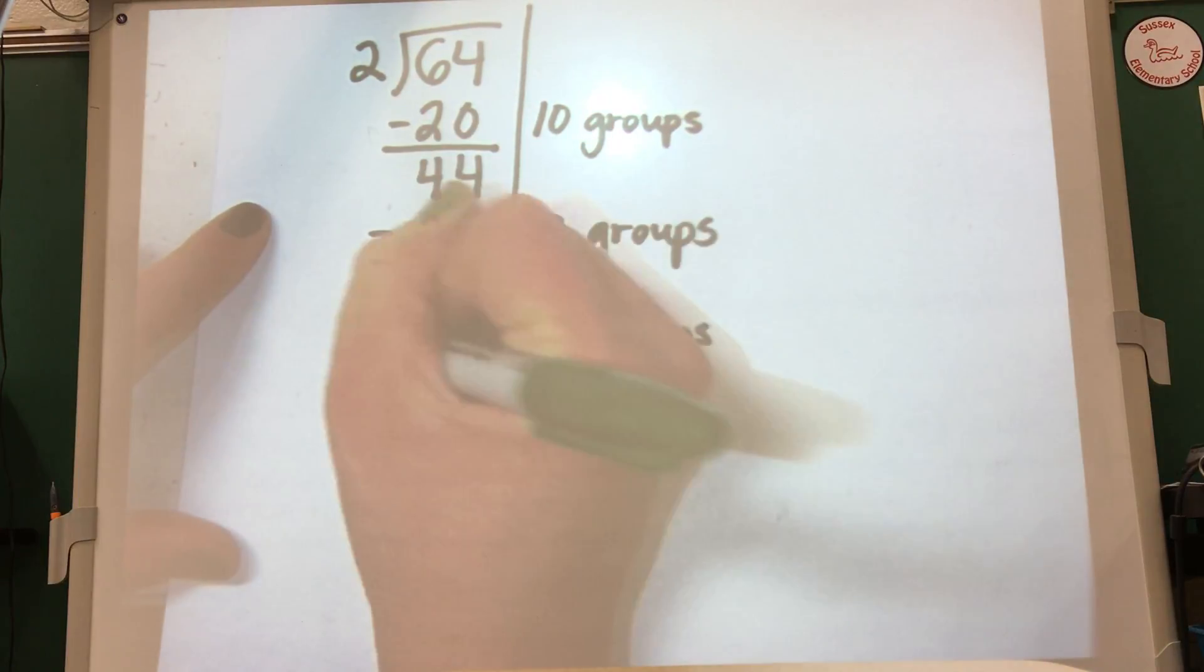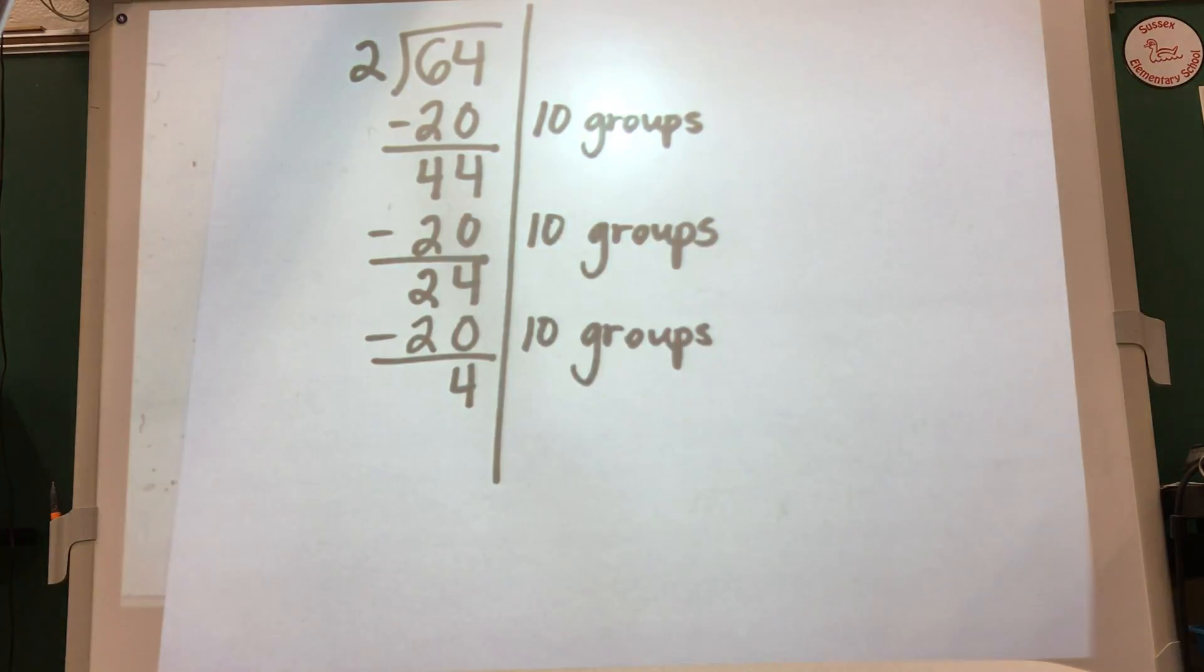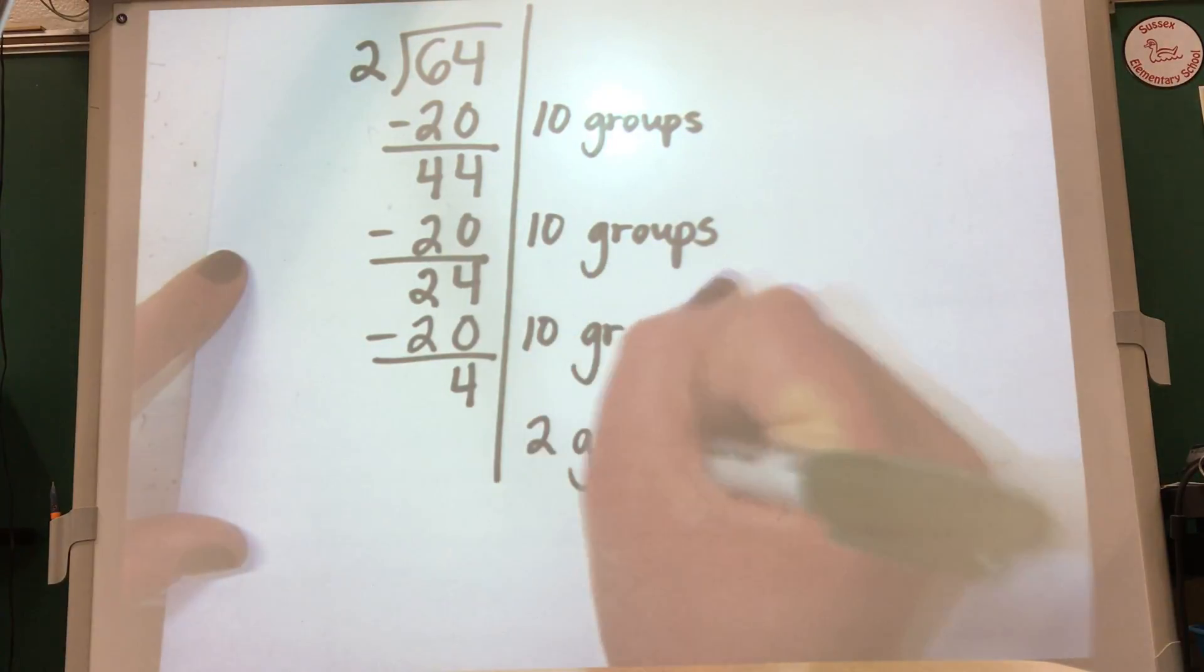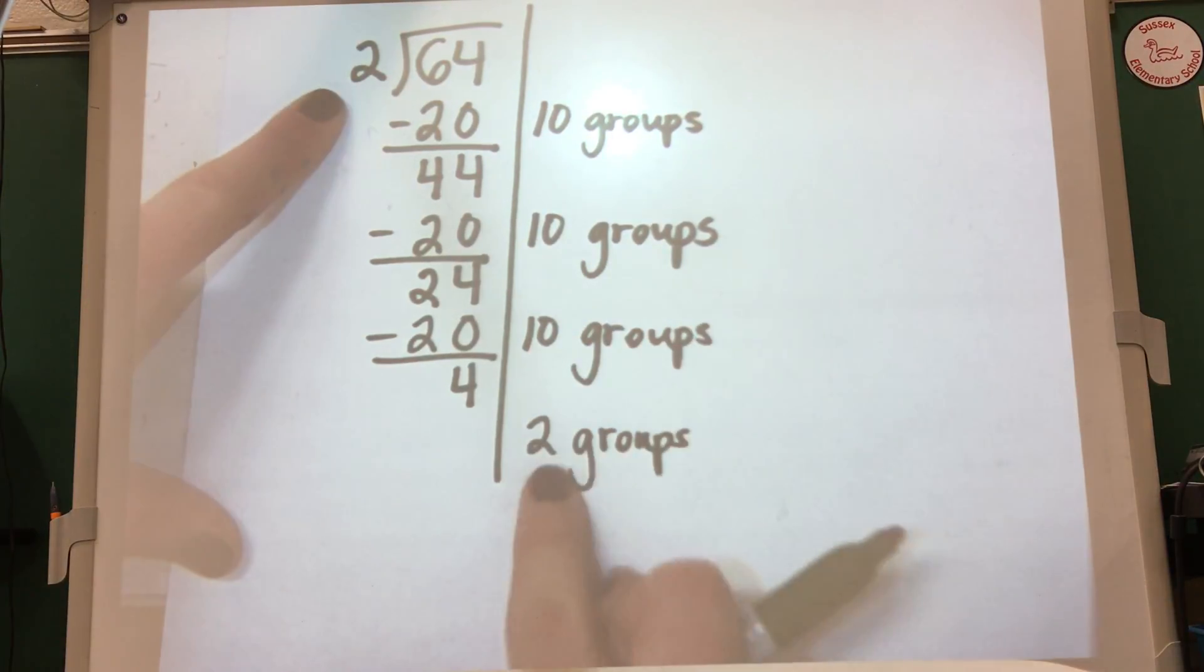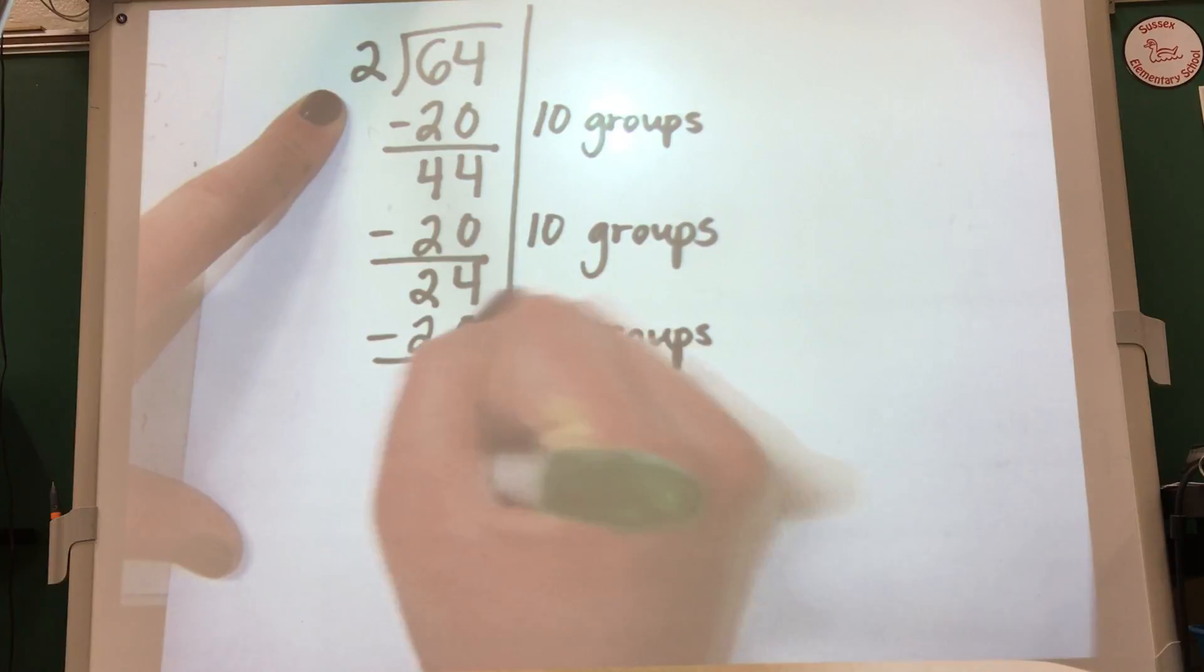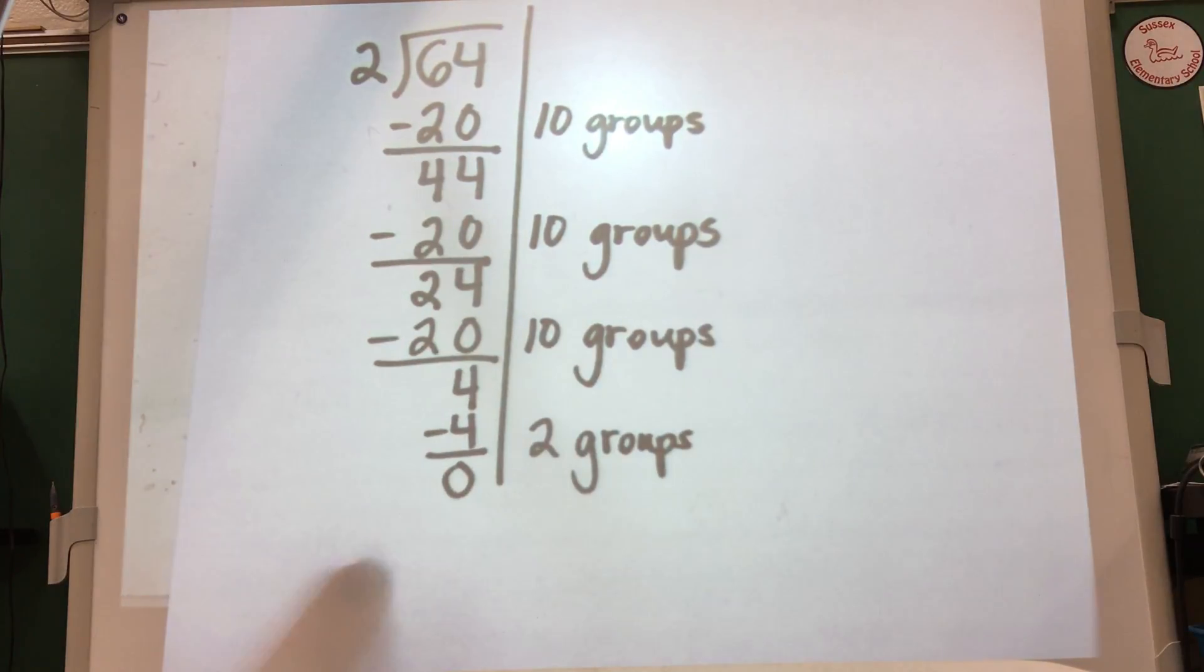If I subtract that I only have 4 left. That's not enough to pull out another 10 groups of 2, but I do know that 2 groups of 2 will make 4 because 2 times 2 is 4. And if I take away 4, I'm left with 0. All problems that students do this week will end in 0. That means there's no remainder. Next week they'll look at if problems do not end in 0 and how to deal with that, but this week all ends in 0, no remainders.